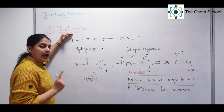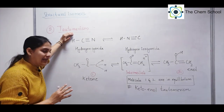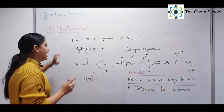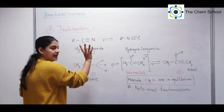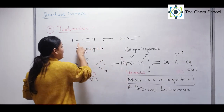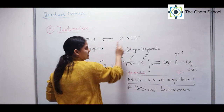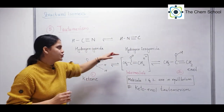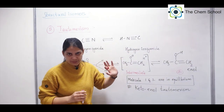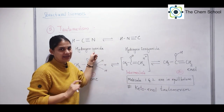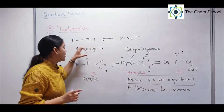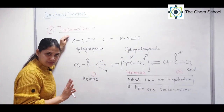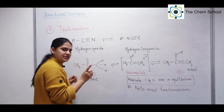Let's talk about tautomerism. I will take a detailed lecture on tautomerism, but from the isomerism point of view, here is what is important. The first example is hydrogen cyanide — HCN. Comparing HCN with the structure on the right-hand side, the hydrogen is attached to carbon in one case, and to nitrogen in the other case — so it is flipped. We call these hydrogen cyanide and hydrogen isocyanide. These two molecules exist in a continuous dynamic equilibrium with each other. When a molecule exists in both forms like this, we call it tautomerism. These two are tautomers of each other.